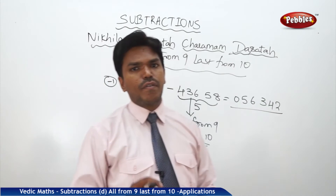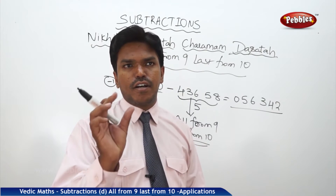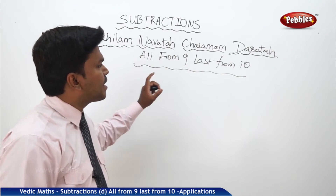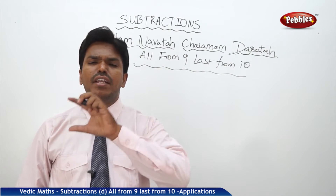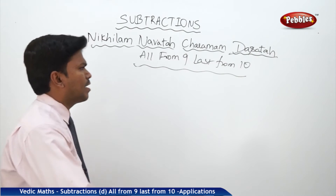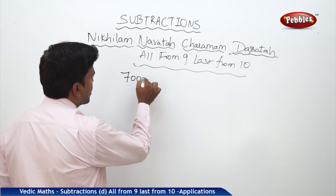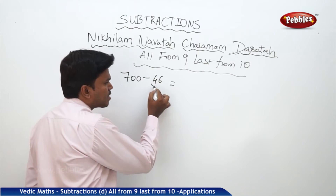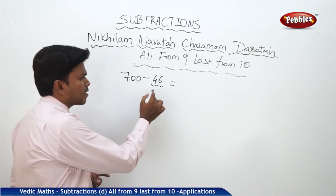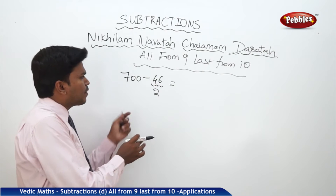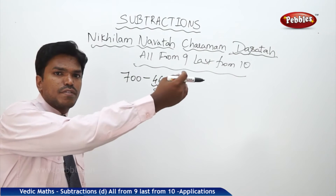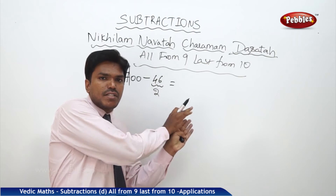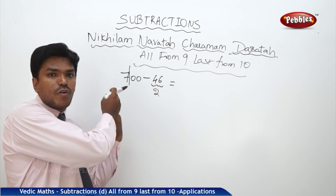We will go through this step by step, taking smaller examples to bigger examples. This method can be applied whenever the minuend is having many zeros. For example, suppose it is 700 minus 46. I want to subtract 700 minus 46. First, tell me how many digits are there in the subtrahend — two digits. That means you have to make a partition of the minuend after two digits from the right. After that many digits from the right, you make a partition in the given minuend.